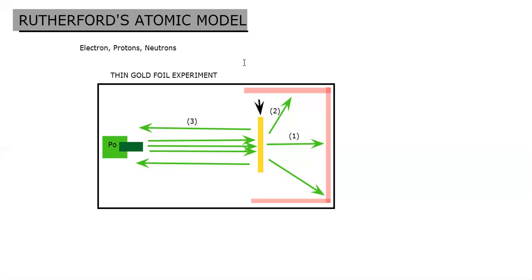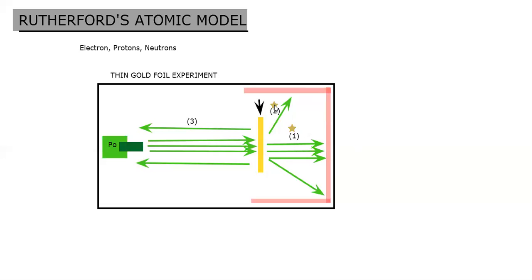The observations noted were: first, the maximum number of rays passed through the gold foil without any deflection. Second, some rays were deflected at varying degrees of angle. Third, some rays reversed back. These were the three observations from Rutherford's basic experiment with thin gold foil and alpha particles.